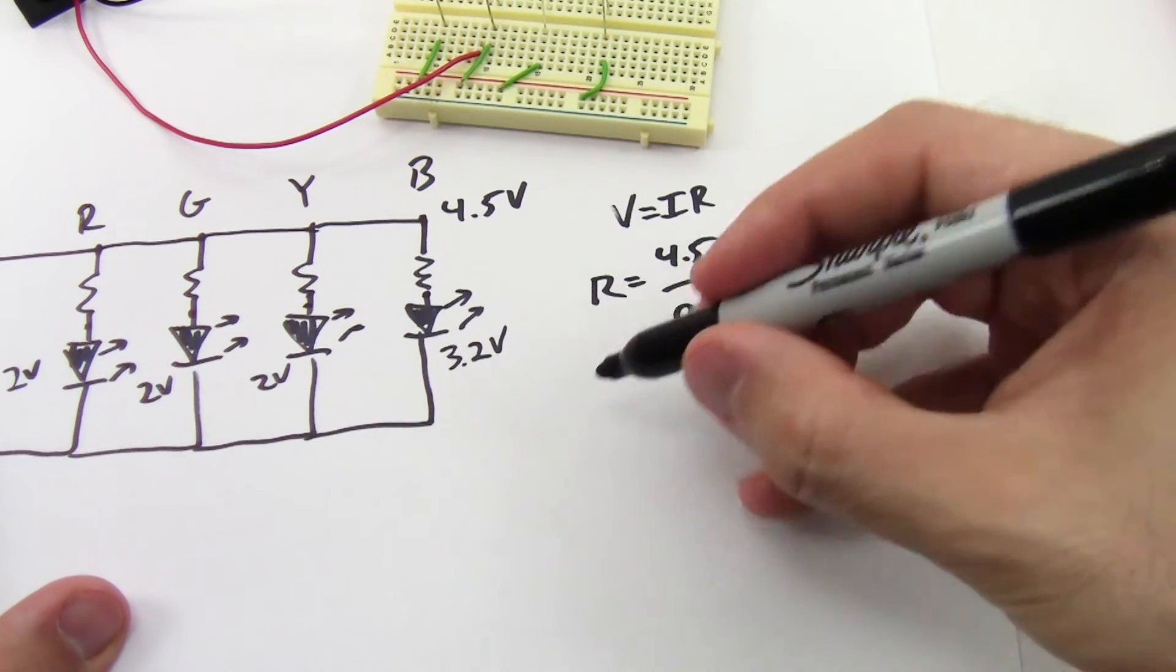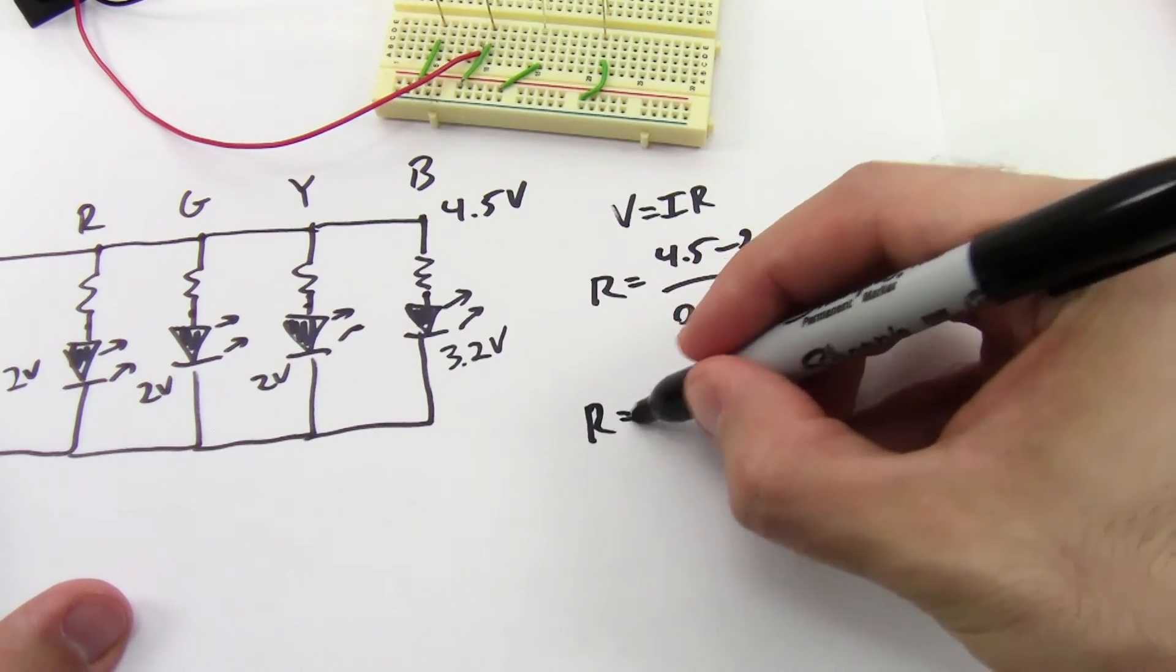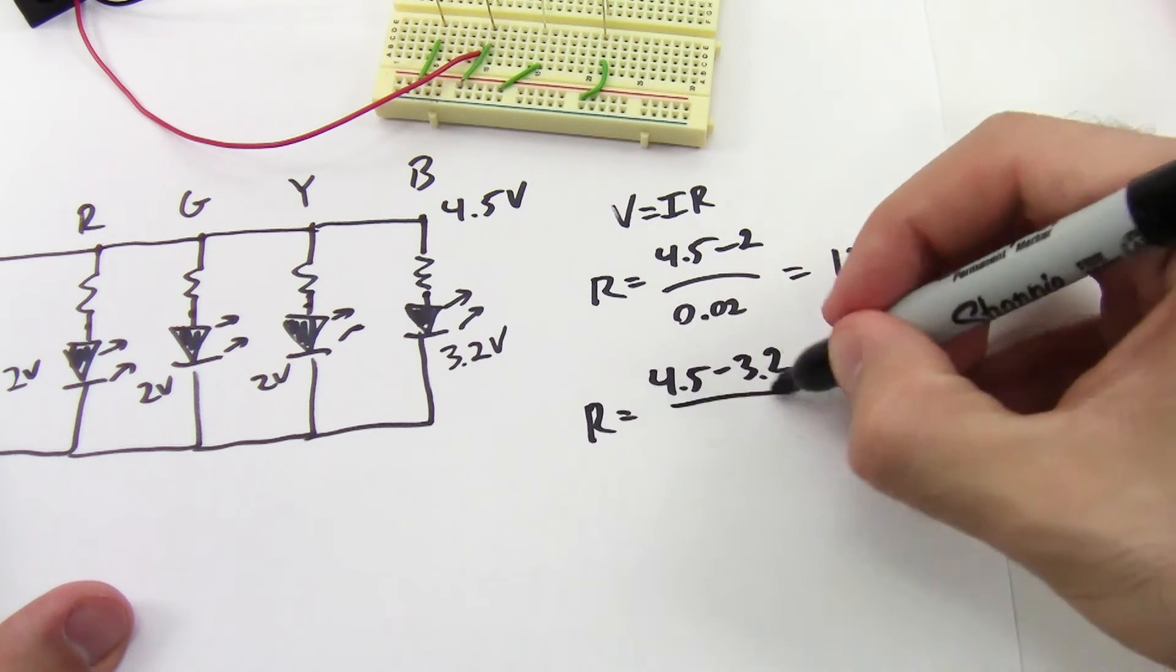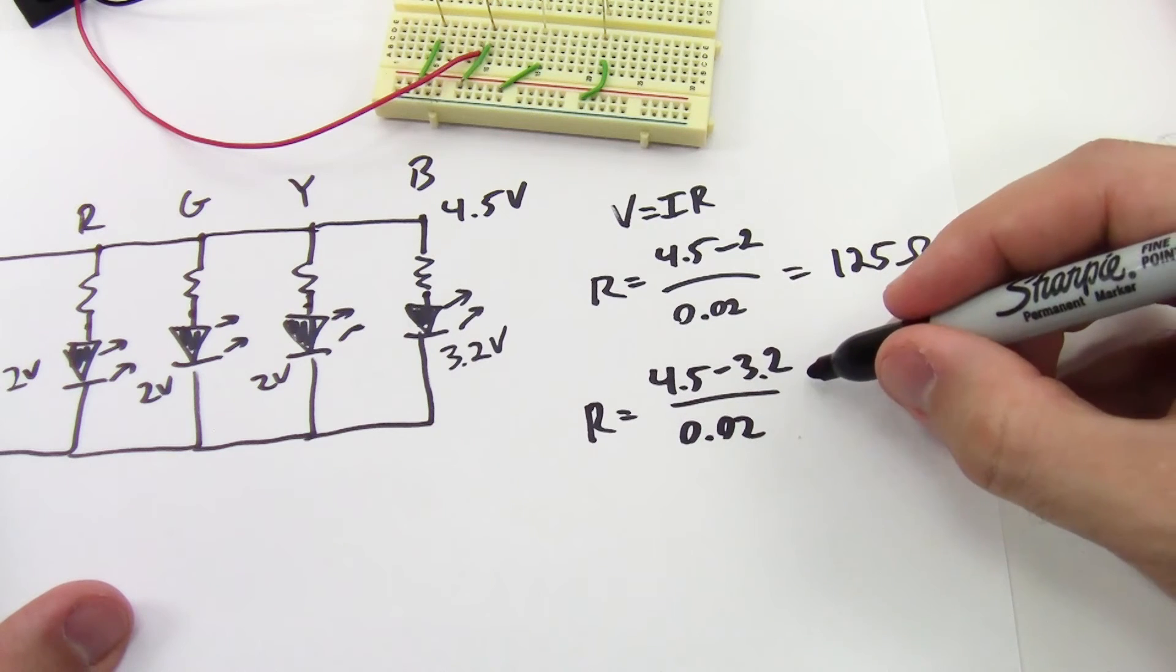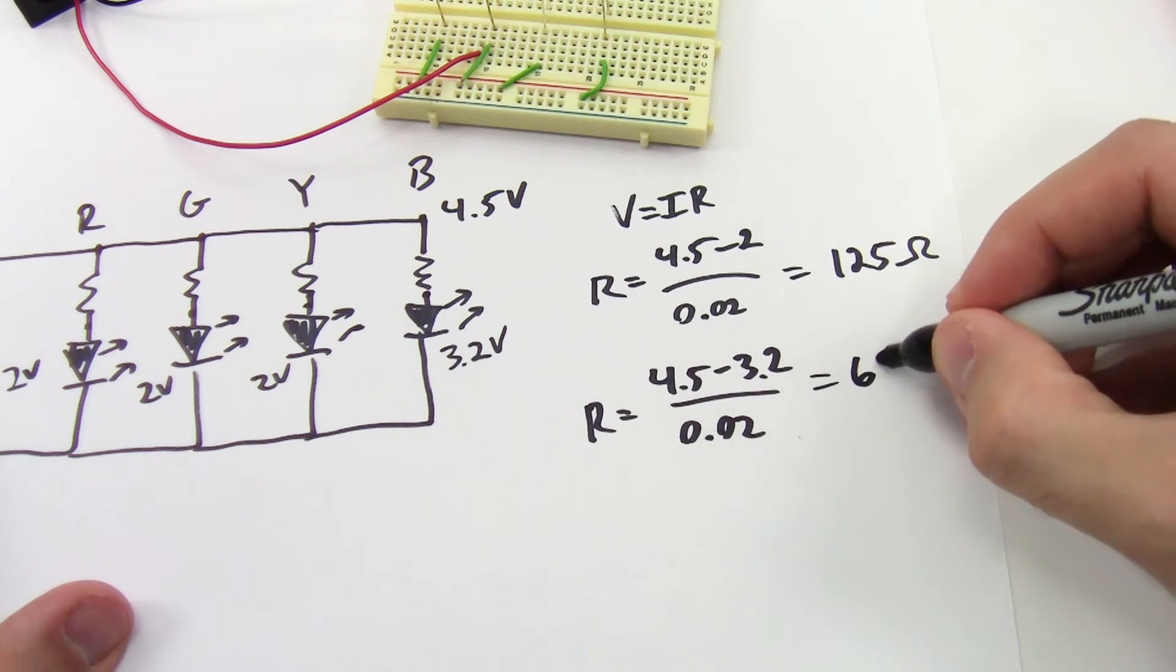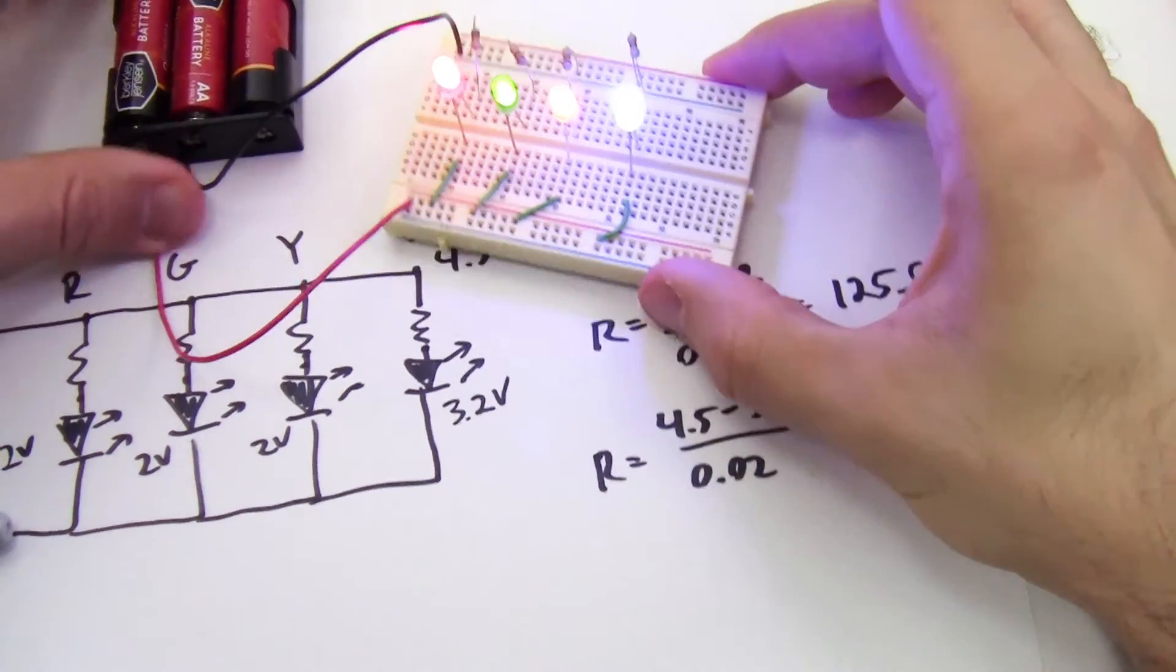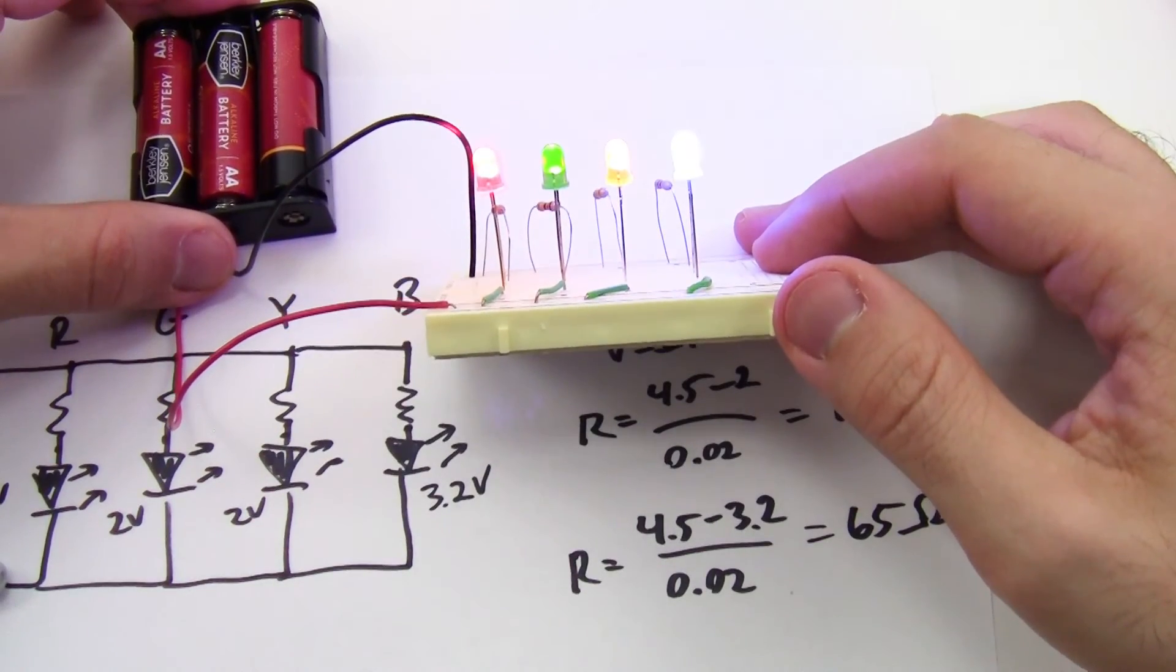And when I do that for the blue LED, I get R equals 4.5 minus 3.2 over 0.02 because I want the current to be the same, and in that case I get 65 ohms, so I'm just going to use a smaller resistor for the blue LED. And when I try that, you can see now that all four of my LEDs light up.